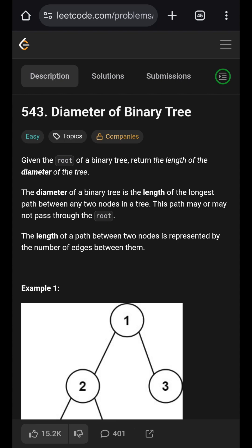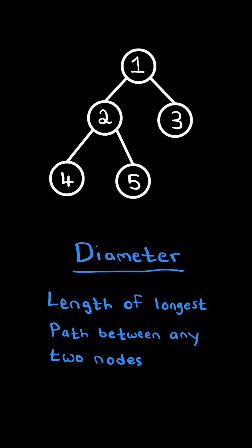Diameter of binary tree. Given a binary tree, the diameter of a binary tree is the length of the longest path between any two nodes.